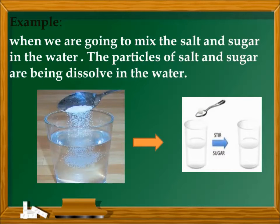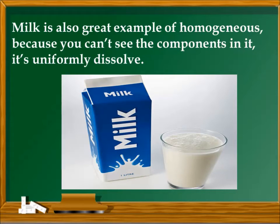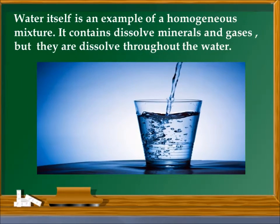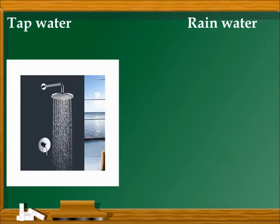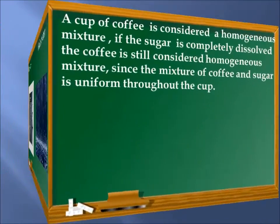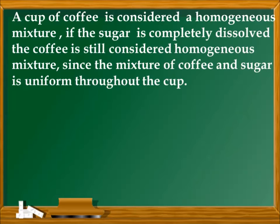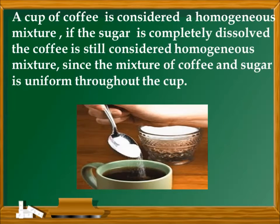Milk is also a great example of a homogeneous mixture because its components are uniformly dissolved. Water itself is an example of a homogeneous mixture — it contains dissolved minerals and gases that are dissolved throughout. Tap water and rainwater are also examples of a homogeneous mixture.